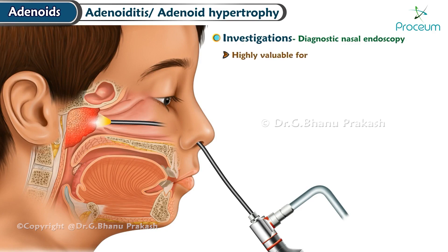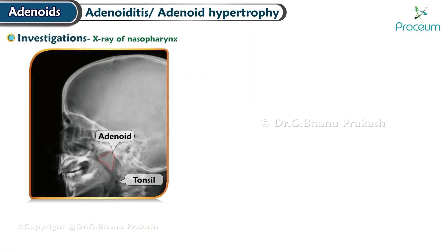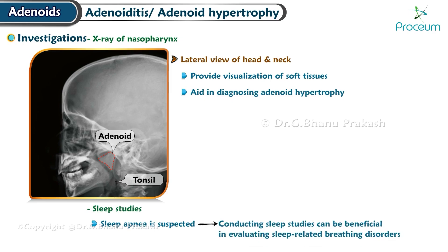Investigations: diagnostic nasal endoscopy is highly valuable for assessing the extent of adenoid hypertrophy and evaluating the impact on the nasopharyngeal airway, particularly in relation to the choanal openings and the Eustachian tube orifice. X-ray of the nasopharynx — a lateral view of the head and neck — can provide visualization of soft tissues and aid in diagnosing adenoid hypertrophy. Sleep studies: if sleep apnea is suspected, sleep studies can be beneficial in evaluating sleep-related breathing disorders.